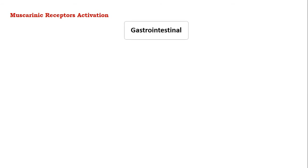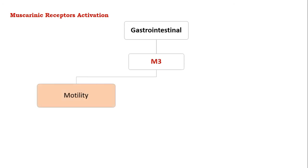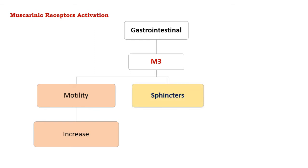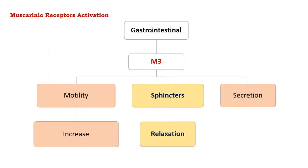On the gastrointestinal system, M3 receptors will be activated, which will increase the motility of the intestine by causing contraction of the intestinal smooth muscles. At the sphincter, it causes relaxation, and with respect to secretion, it increases the intestinal secretions.